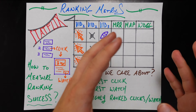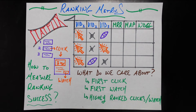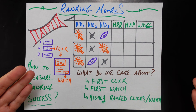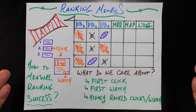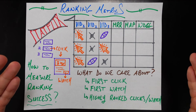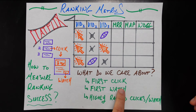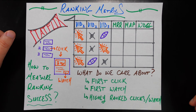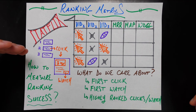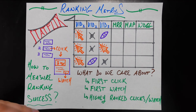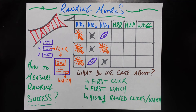Before diving straight into the metrics, let's answer a more topical question first: what do we actually care about in this application? This is a bit of a loaded question because there's not an obvious answer. One answer could be: I care about the position at which the user first clicks. All I care about is what's the first thing you click on. If that first thing you click on is in position one, I did my job regardless of whatever else happens in the list. If it's position two, that's worse. If it's position three, that's even worse. That's one way to answer the question.